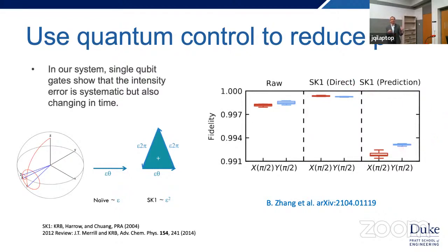When I feed these gates into Sandia's gate set tomography package (GST), it tells me things won't work — but it's not entirely fair, because GST expects every gate to be identical. My quantum control takes advantage of knowing that I have a slowly drifting laser intensity, which GST can't model. It's a chicken-and-egg problem: how do we get reliable information about what's wrong with our gates so we can fix it?